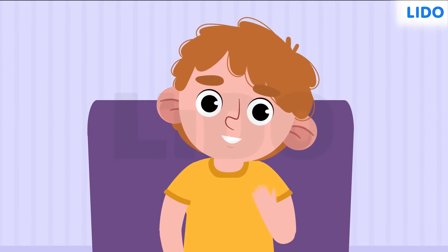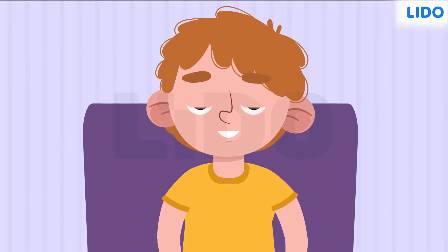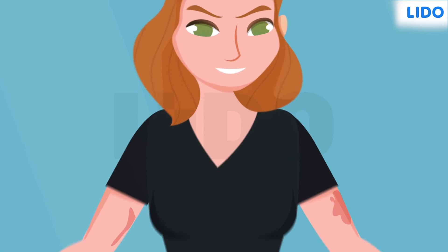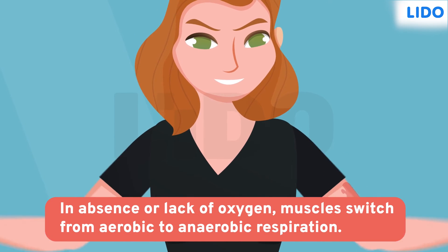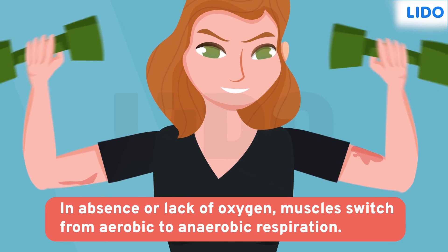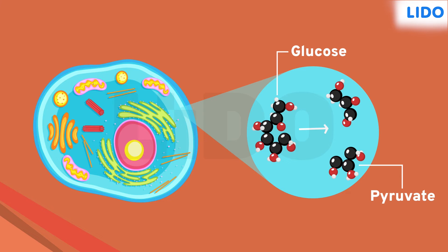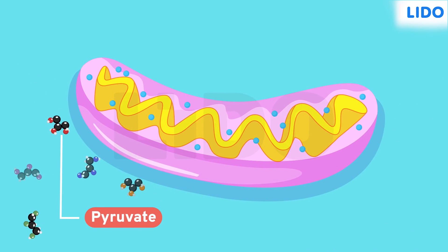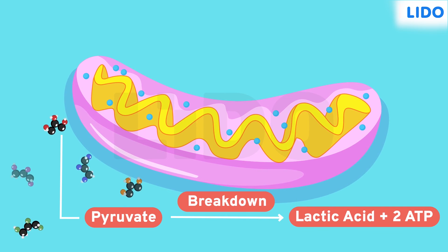Raj started to wonder what will happen in case we don't get oxygen. How does anaerobic respiration produce energy? When we perform strenuous activities such as running or lifting weights, the muscle cells do not get enough oxygen. In the absence of oxygen, the muscle cells quickly switch from aerobic to anaerobic respiration. During anaerobic respiration, glucose is broken down to pyruvate in the cytoplasm of the muscle cells. Since oxygen is absent, pyruvate does not enter the mitochondria, and is instead modified to lactic acid — with only two ATPs produced.